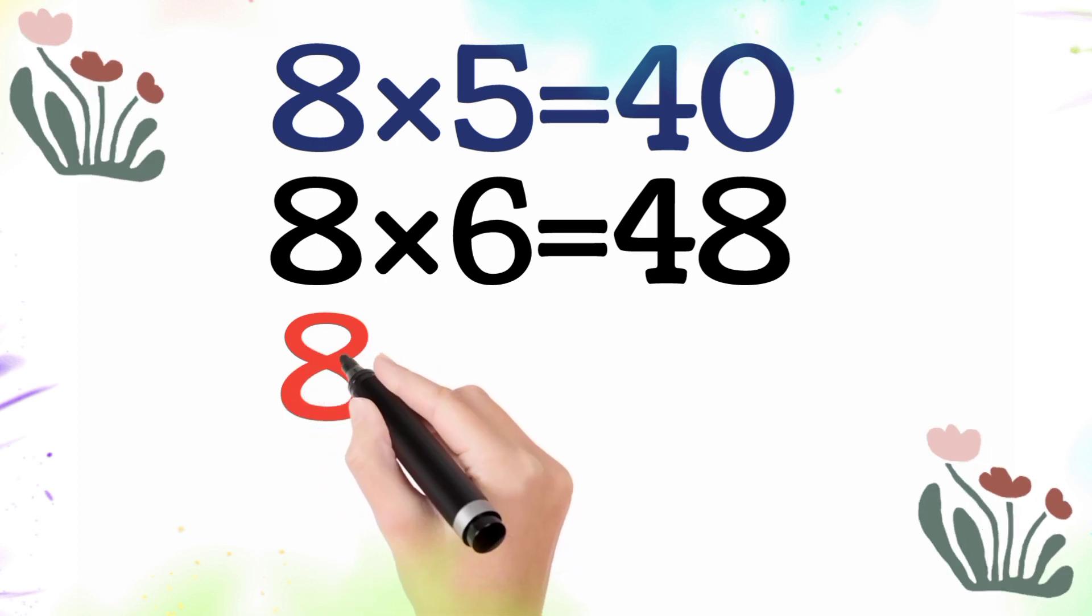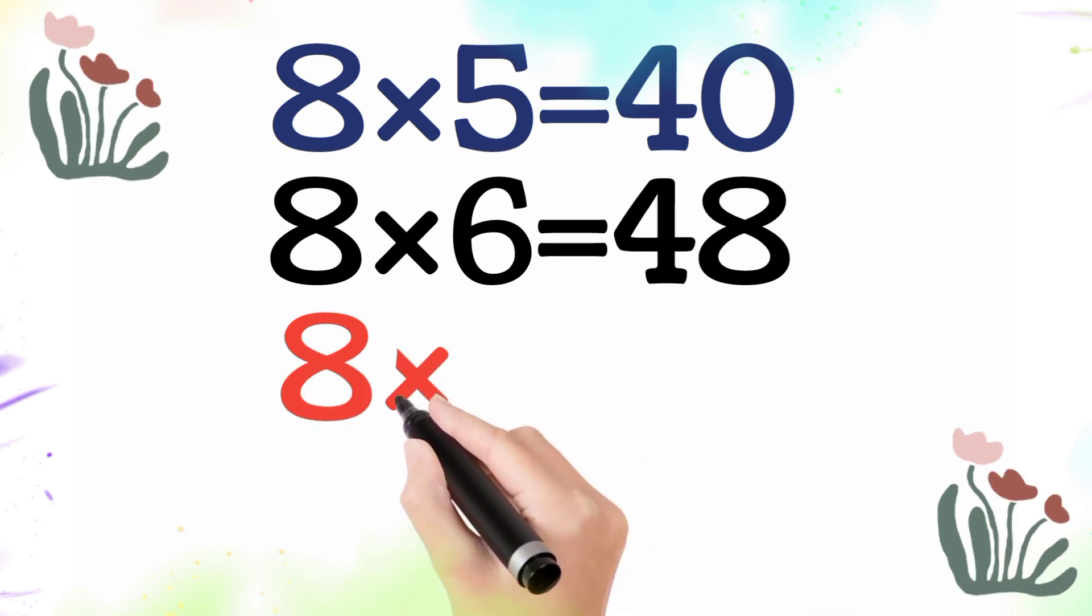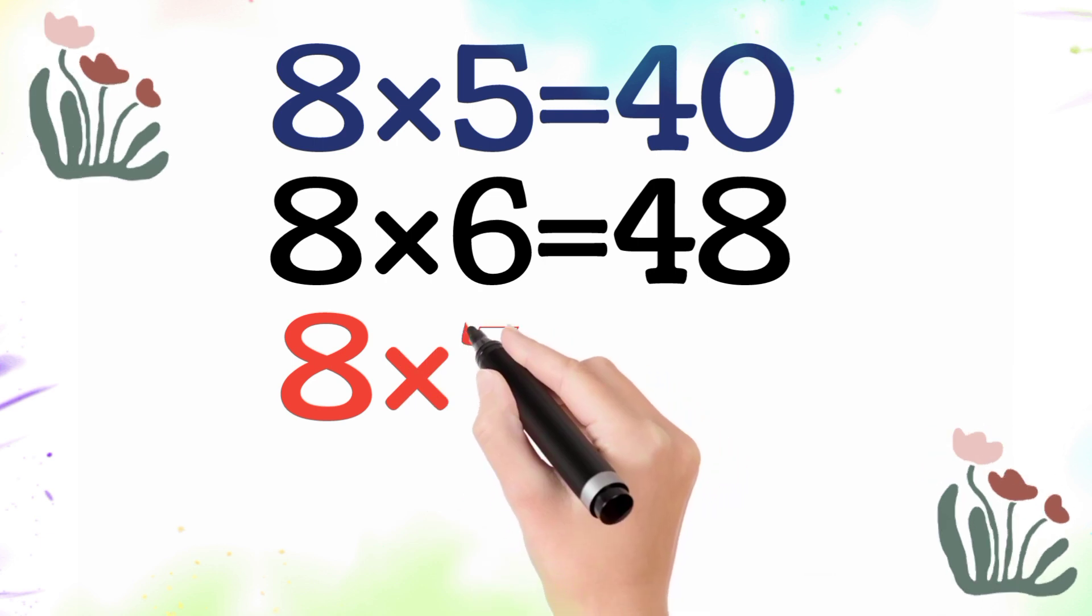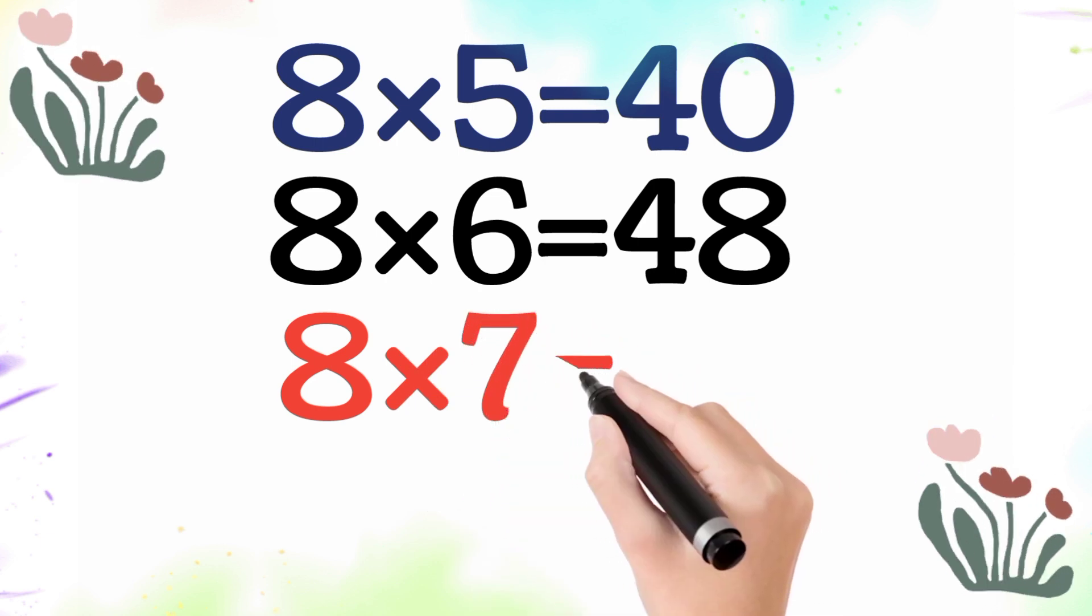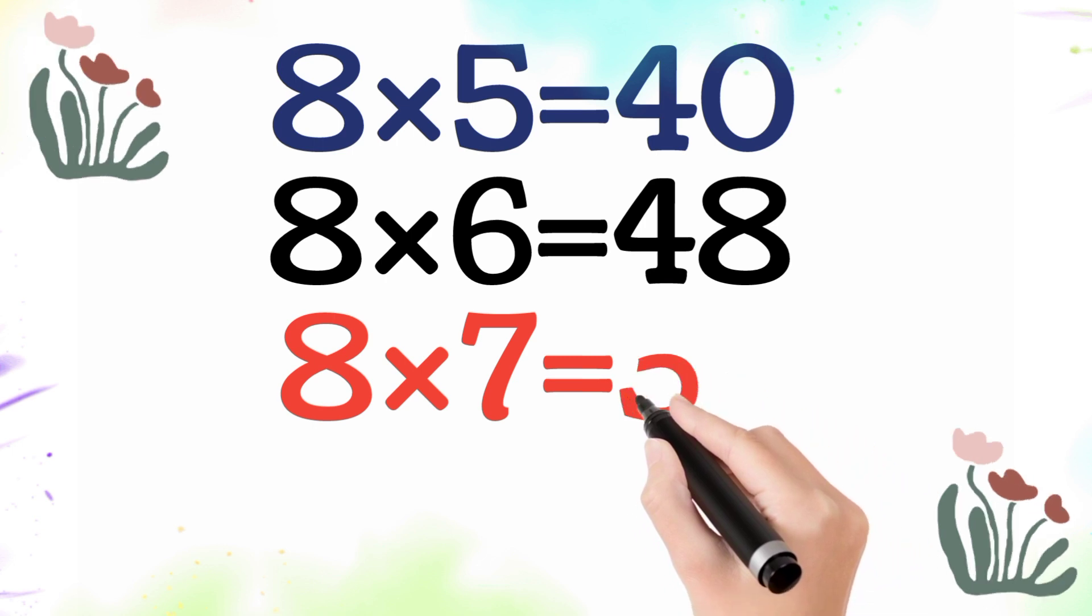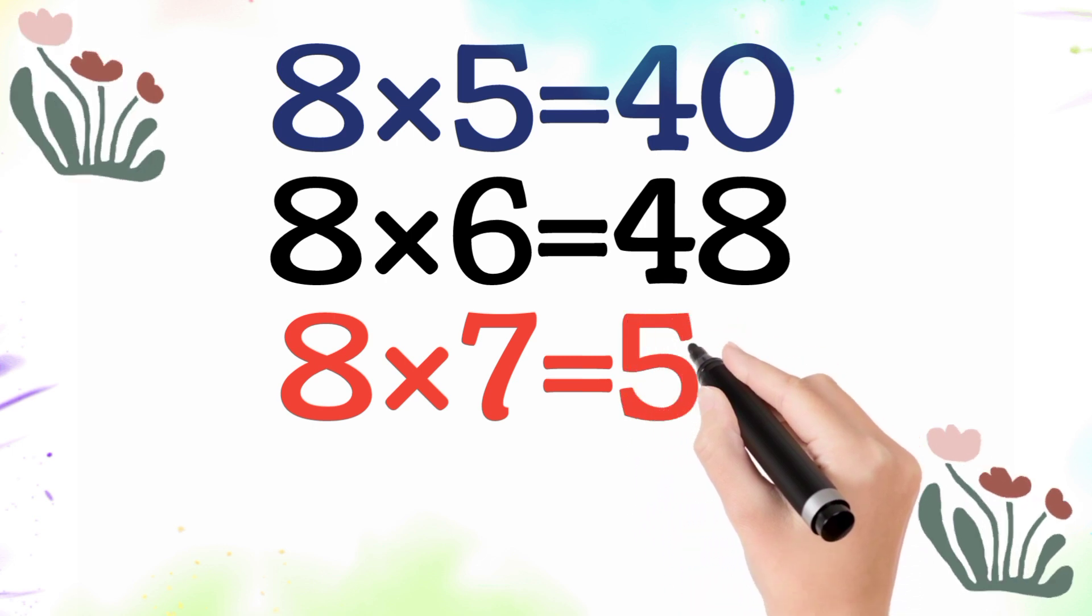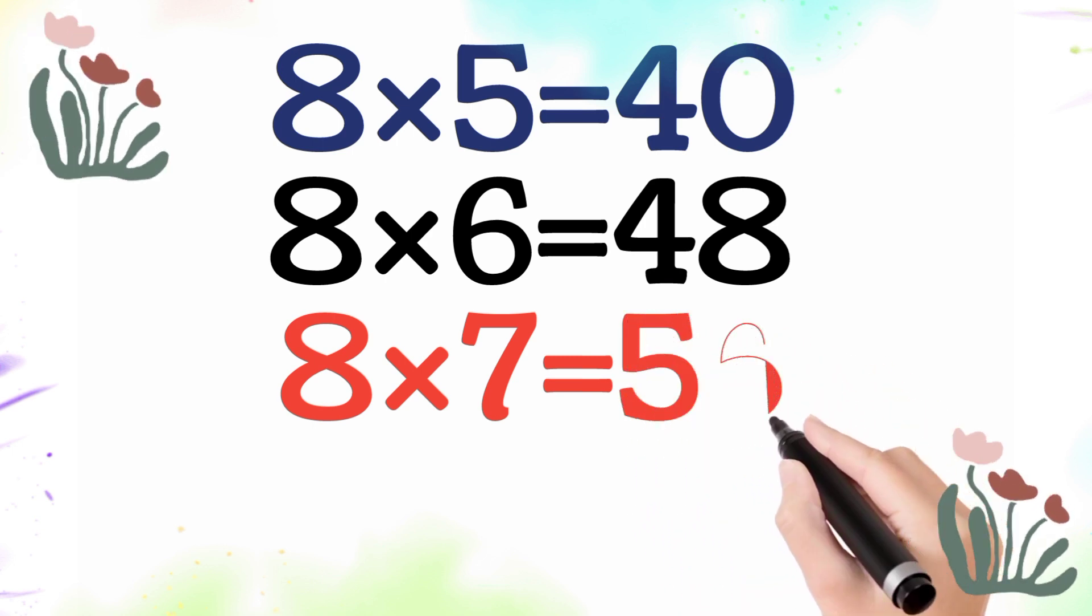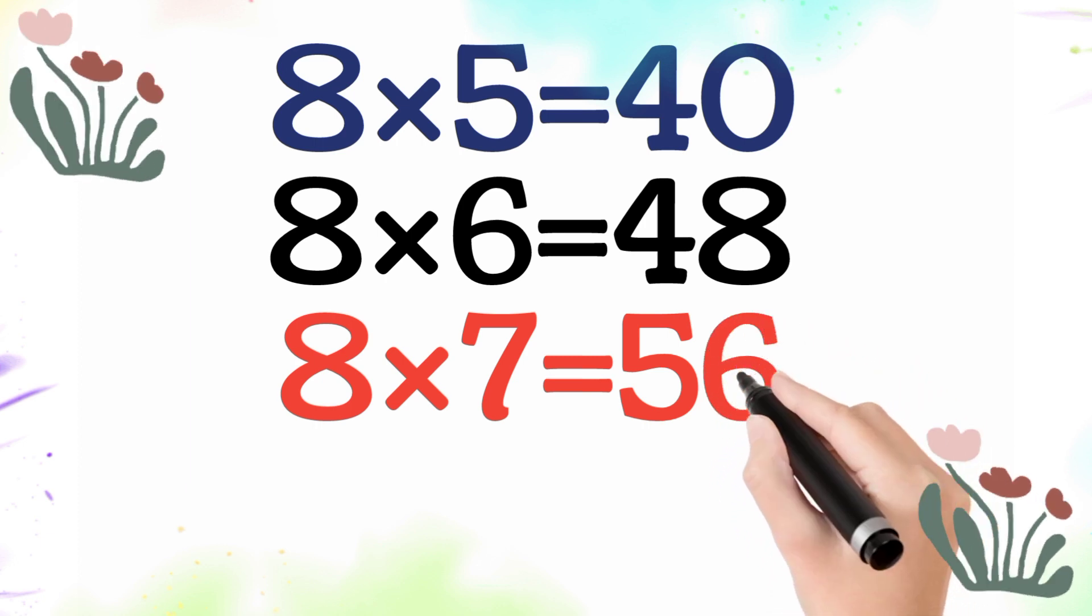8 multiplied by 7 is equal 56. So 8 times 7 is 56.